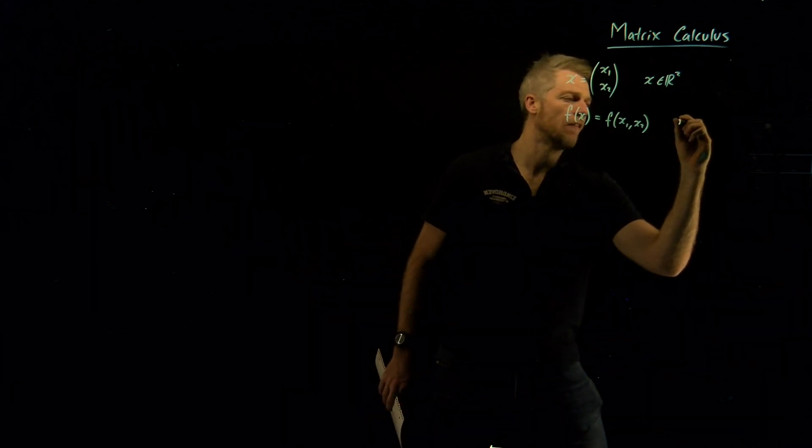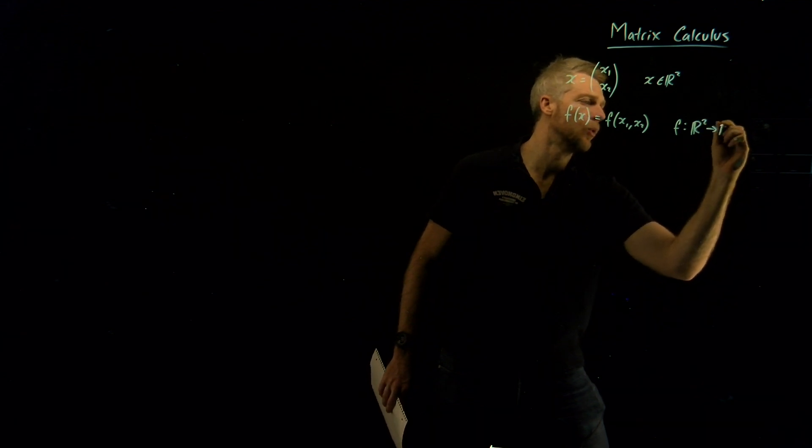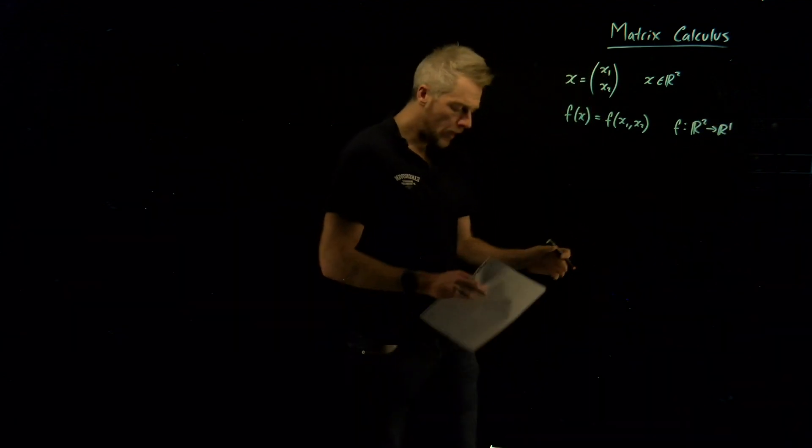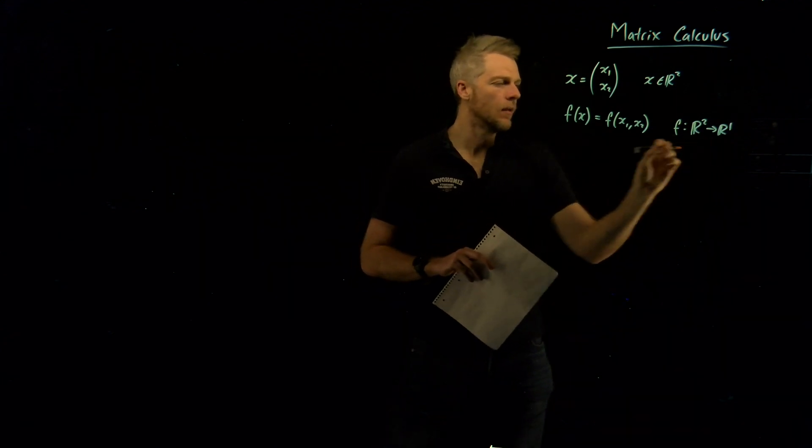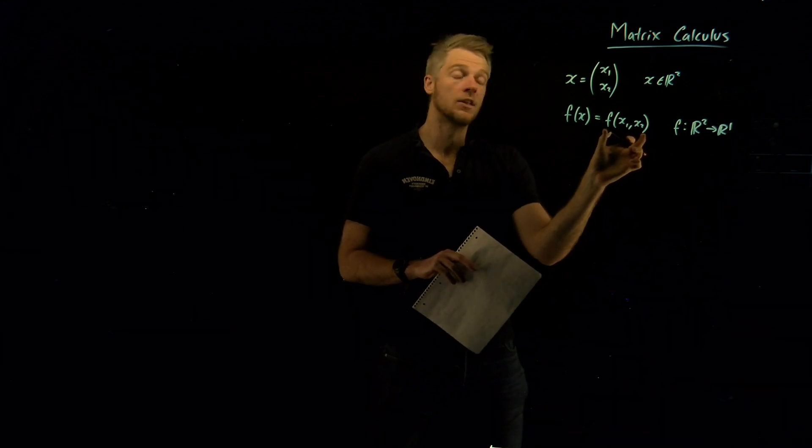In other words, we can say that f maps from R2 to R1. And what this is, is really, this is a nerdy way of saying that we have a two-dimensional input, right? We have x1 and x2, so two-dimensional input. But let's say we only have a one-dimensional output.